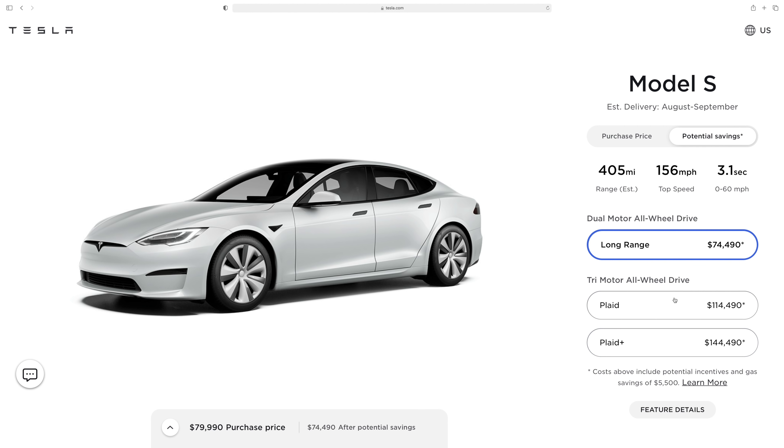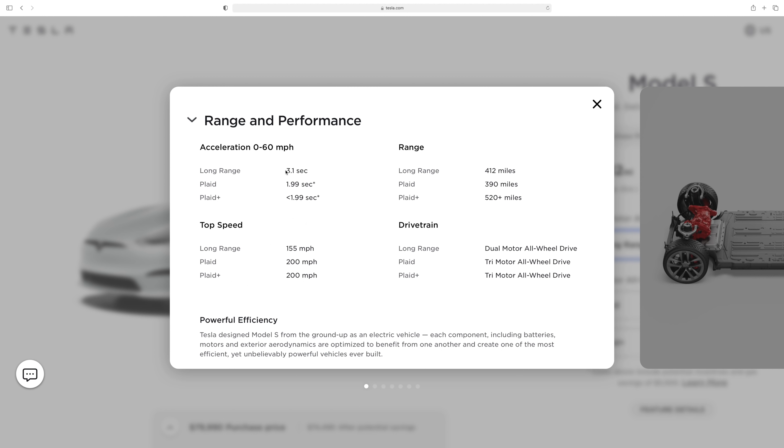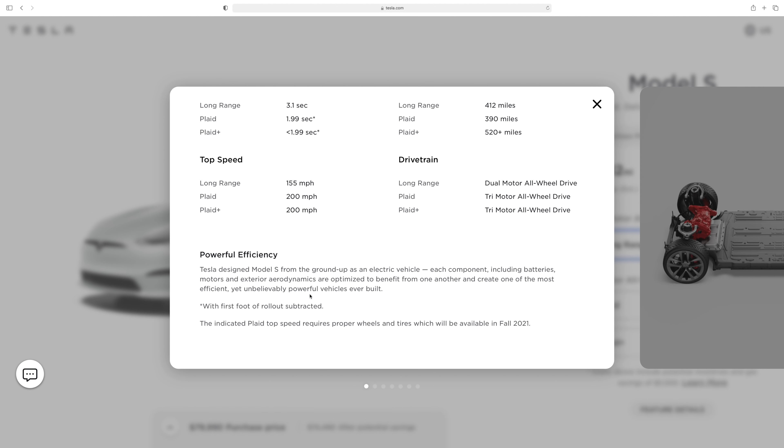But what if you read the fine print? Well that pulls up a page which provides more details and shows you a side-by-side comparison of the different models. Turns out the 1.99 second claim actually does have an asterisk in the fine print, and that asterisk reveals they're subtracting the first foot of rollout.